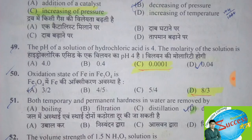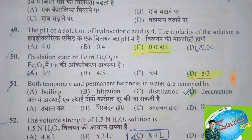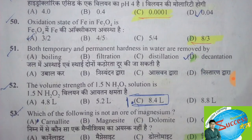The pH of a solution of hydrochloric acid is 4; the molarity of the solution — the correct answer is option C, 0.0001. The oxidation state of Fe in Fe3O4 — the correct answer is option D, 8/3.